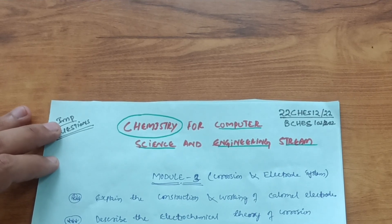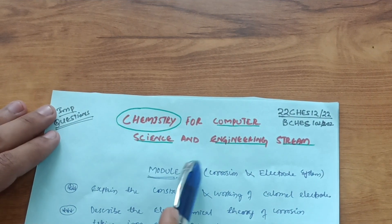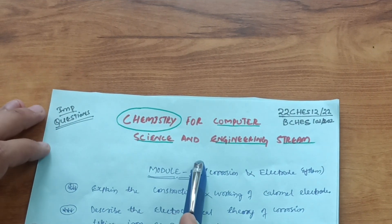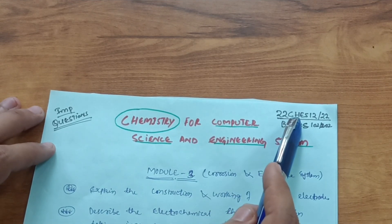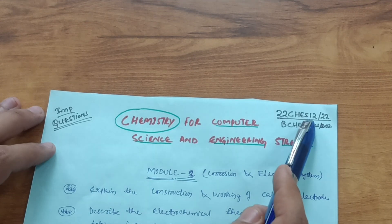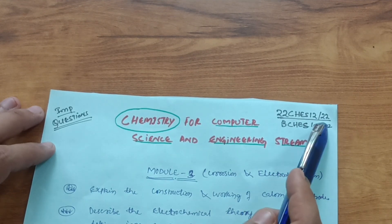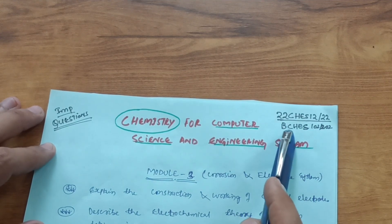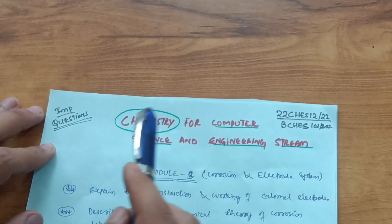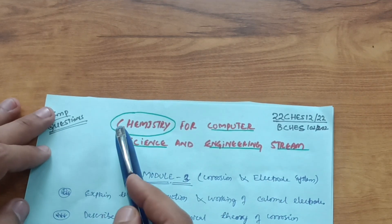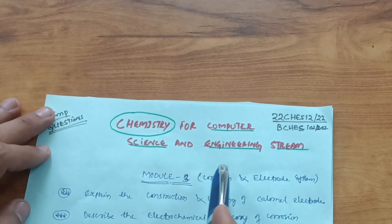Welcome back to my channel. Today I am covering another subject — Chemistry for Computer Science and Engineering stream students, 2022 scheme. The subject code is 22CHES12 or 22CHES22, meaning it is the second subject in both first semester and second semester. The subject code is also BCHES102 or BCHES202. I will discuss some important questions to score well in Chemistry for CSE stream.